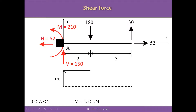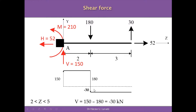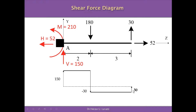An easy way to sketch the shear force diagram is to start with a horizontal reference line and add vertical forces from left to right. We begin with V equal to 150 kN, then draw a horizontal line (constant between forces) until we reach the 180 kN load. Adding 180 kN gives a jump: 150 minus 180 equals minus 30 kN — the shear force after the load. We then close the diagram with the 30 kN force at the right end.